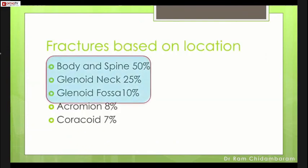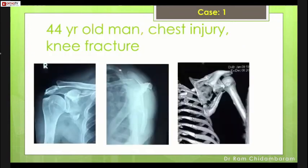Based on location, fractures are most common in the body and spine, followed by the glenoid neck and fossa, and then the acromion and coracoid processes. Let us look at the cases.